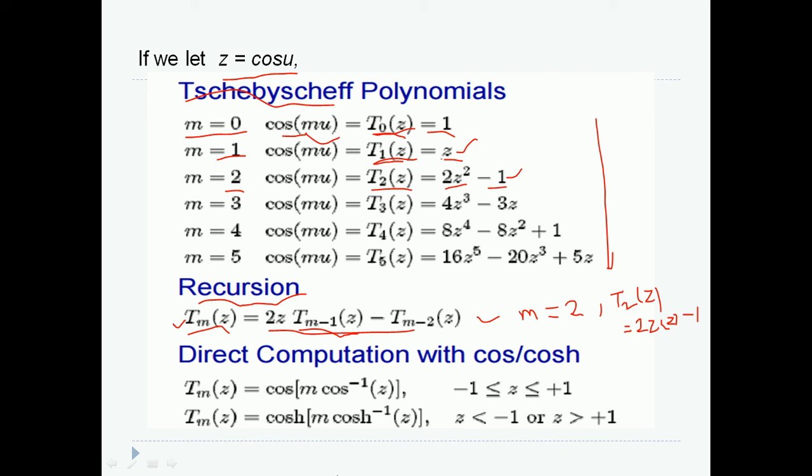I can even write the expression for Chebyshev polynomial Tm(Z) in terms of cos directly as cos(M cos inverse Z) for values for Z less than or greater than minus 1 and 1. And for values where Z is less than minus 1 and is greater than 1, I can write the second equation cosh(M cosh inverse Z).